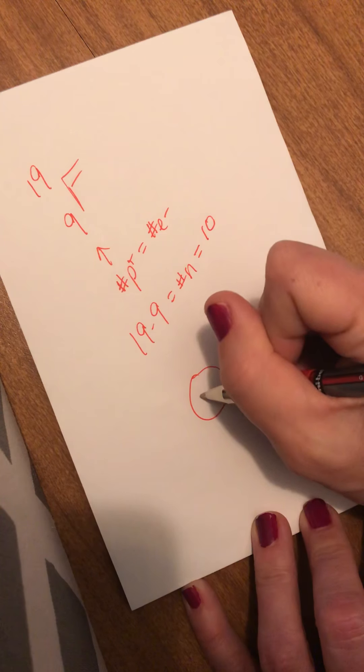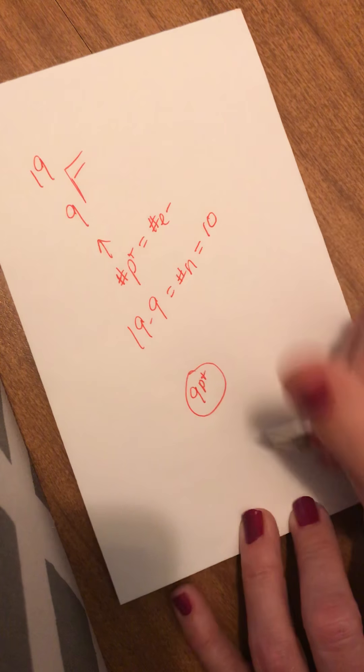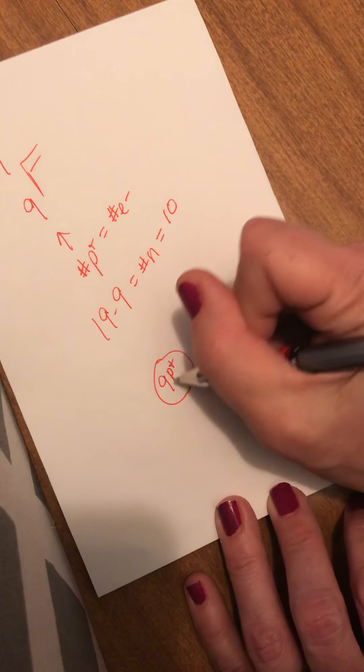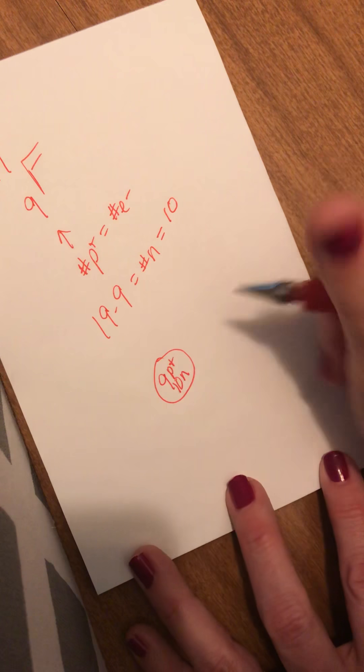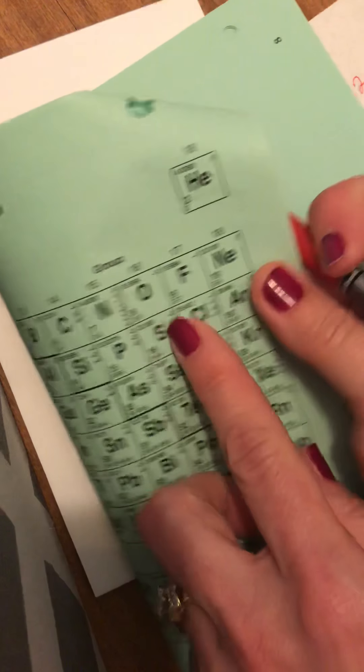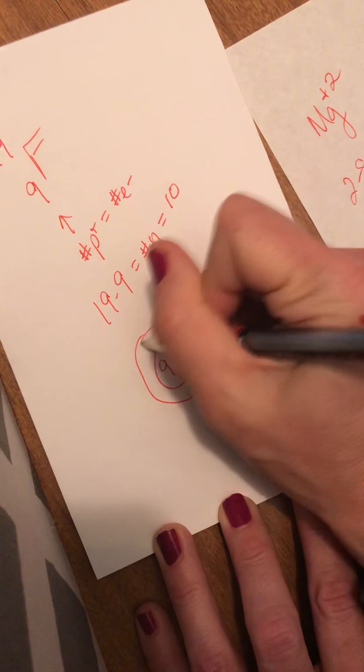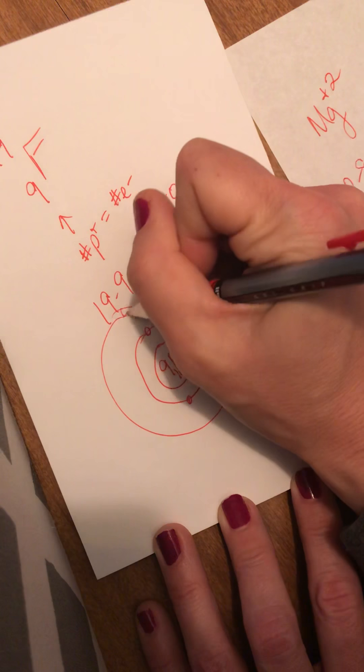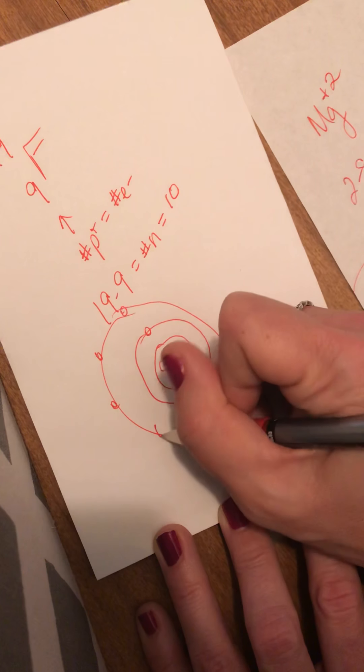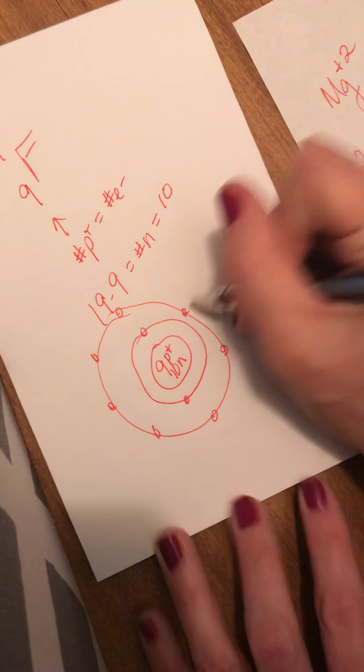So in the nucleus, I have 9 P pluses. So my nuclear charge is 9. And I have 10 neutrons. And then I look here at the configuration and it says 2-7. So my first orbital has 2 and my next one has 7. 1, 2, 3, 4, 5, 6, 7.